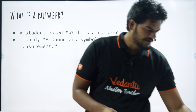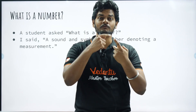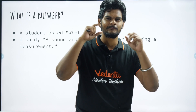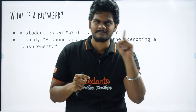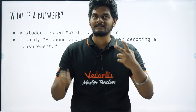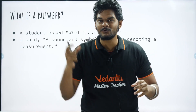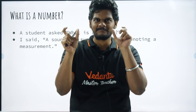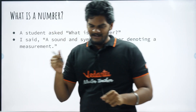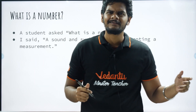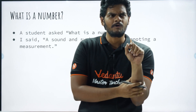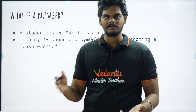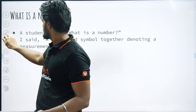We wanted to measure. I have one finger, two fingers, three fingers. So the number one which I am saying and the script one both come together to mean something which is single. And when I am writing two, the sound two and the script two should together mean something which is twice. Then he asked, all numbers cannot be written or measured, right? What about irrational numbers? I said, yeah, we can measure irrational numbers.